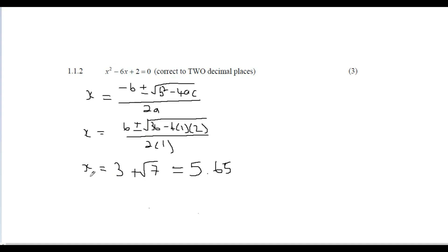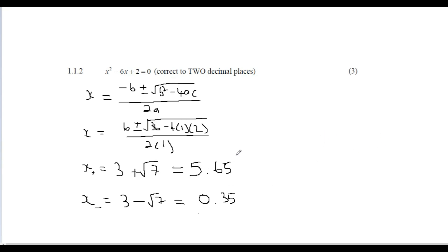For the negative case, x = 3 - √7, which gives x = 0.35. To check your answer, substitute the full unrounded values back into the original equation — don't use 5.65 because that's a rounded value. If you don't get zero, you've probably substituted wrong or missed a square or minus sign.